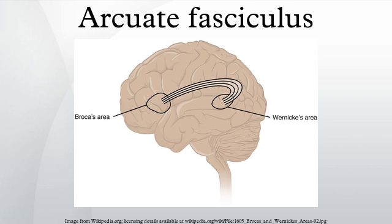A common understanding has been that the arcuate fasciculus connects two important areas for language use: Broca's area in the inferior frontal gyrus and Wernicke's area in the posterior superior temporal gyrus. As the technique of diffusion MRI has improved, this has become a testable hypothesis using brain imaging.